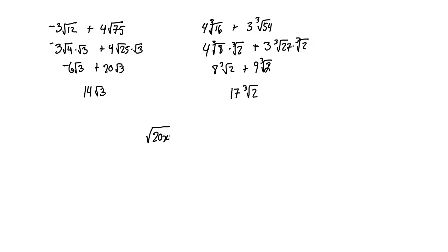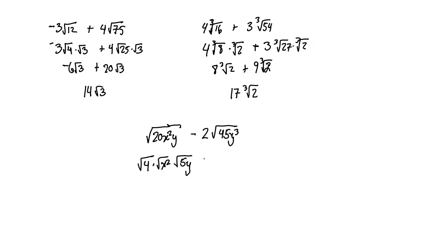Let's try something slightly different: square root of 20x²y minus 2 times the square root of 45y³. We're looking for perfect squares. The first term is root 4 times root x² times root 5y — I've factored out two perfect squares. For the second term, 45 contains a 9, and y³ is y² times y, so we get root 9 times root y² times root 5y. Now simplifying: root 4 is 2 and root x² is x, giving 2x root 5y.